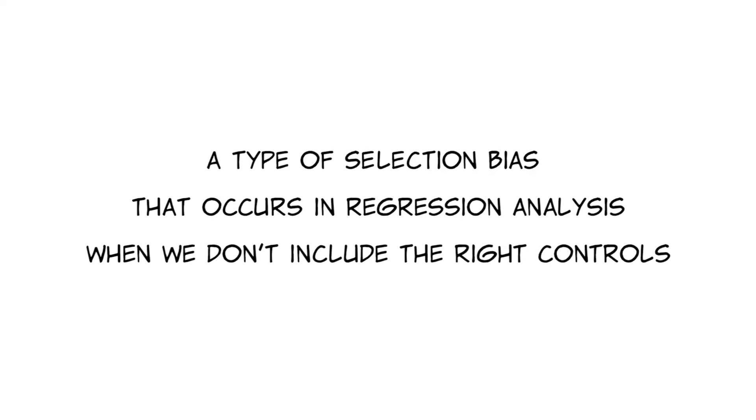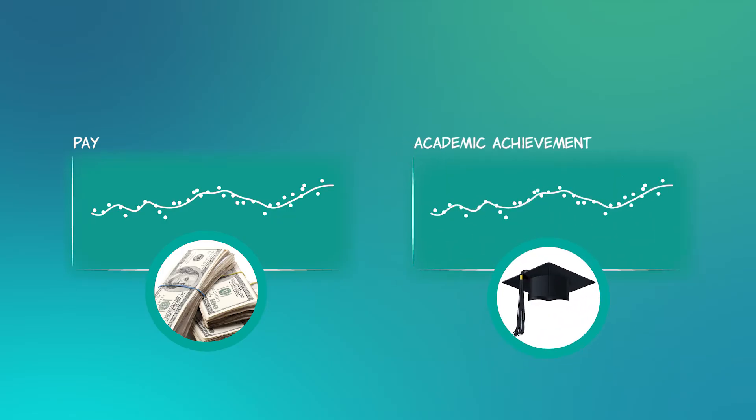It's easiest to show with an example. Perhaps you want to know what patterns are associated with higher pay at your job. Well, no big surprise, but academic achievement goes hand in hand with earning lots of money.